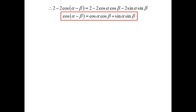Since they're both equal to PQ², they must be the same thing. So 2 − 2cos(α − β) equals 2 − 2cos α cos β − 2sin α sin β. Playing around with that, we get the first of our compound angle formulas: cos(α − β) = cos α cos β + sin α sin β. It's not as simple as just expanding the parentheses to get cos α − cos β — that doesn't work. We have to use this compound angle formula.